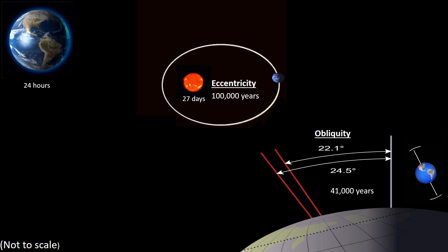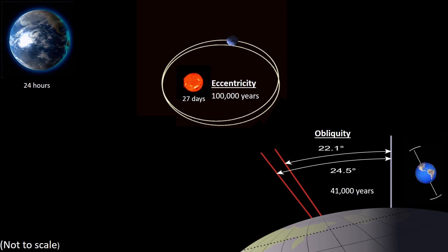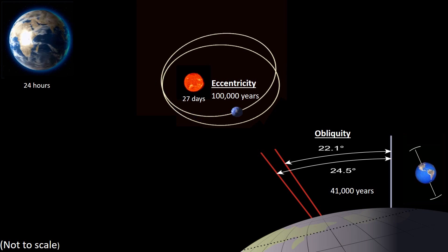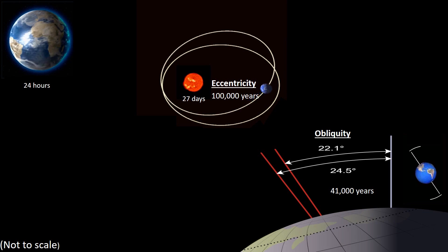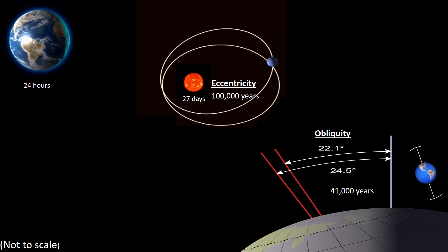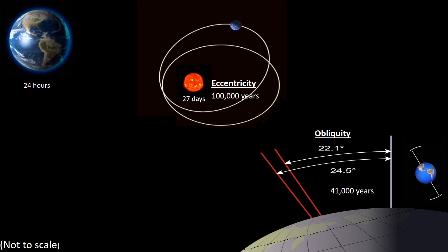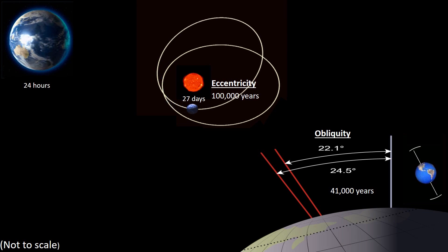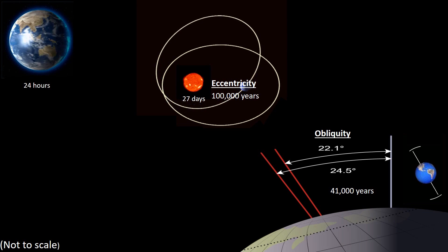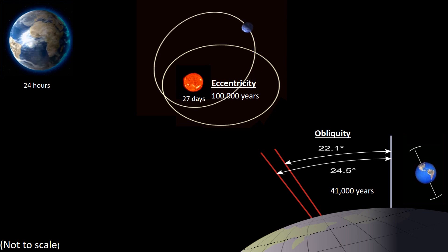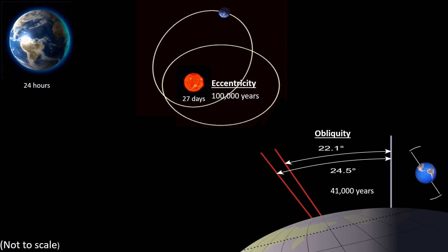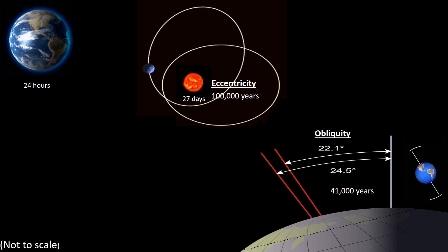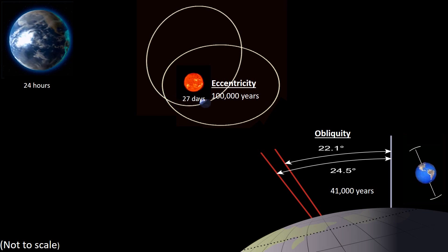The rotation of the Earth is at an angle to the vertical, and this angle changes over time. It moves from 22.1 degrees to 24.5 degrees and back again, over a time span of approximately 41,000 years.